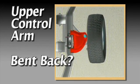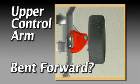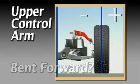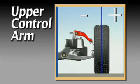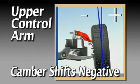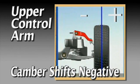Starting with the upper control arm, imagine it bent back or forward. In either case, camber will not shift positive.